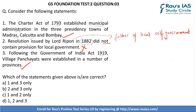Another way to solve this question is through elimination. If one knows that Lord Ripon was called the father of local self-government, they know the second statement is wrong. Looking at the answer options, we can easily eliminate options B, C, and D because all three contain statement 2 as correct. When we eliminate all three, we are only left with A — 1 and 3 only — which is also the correct answer.